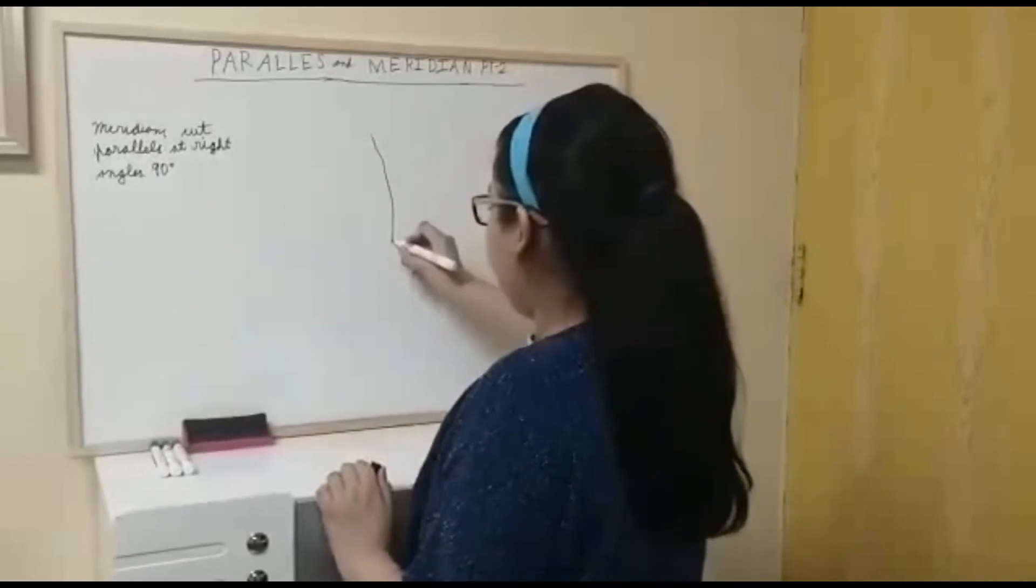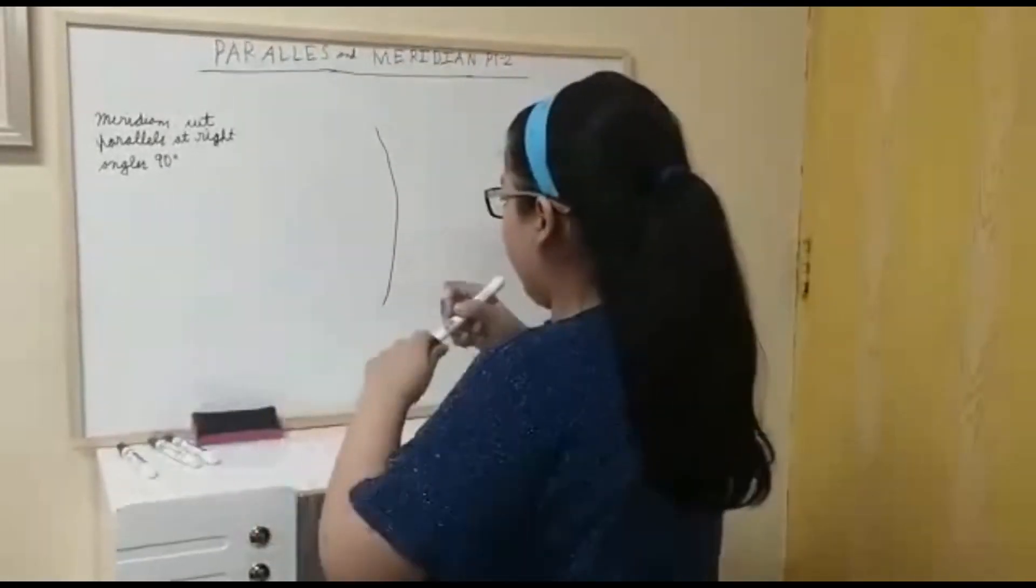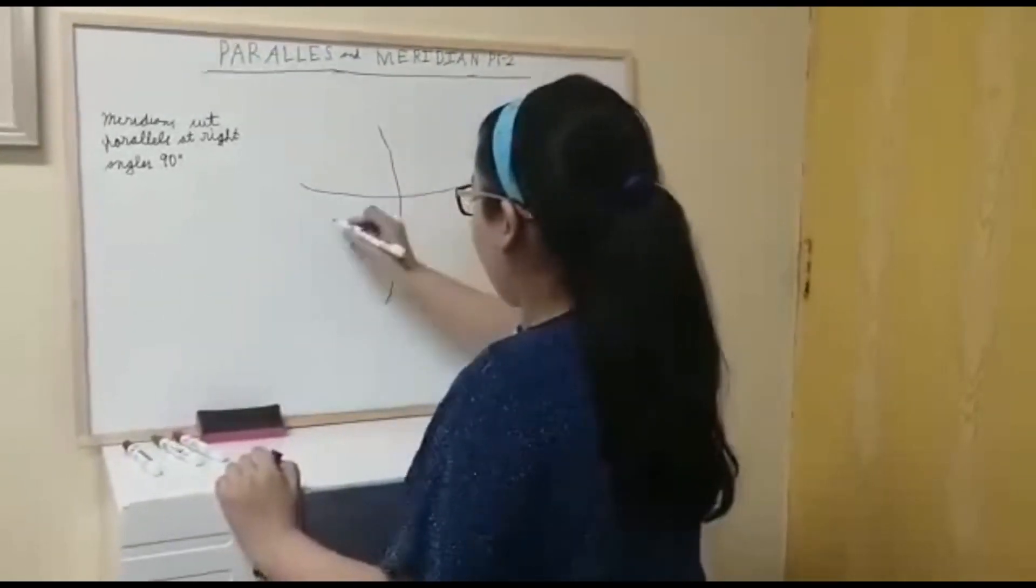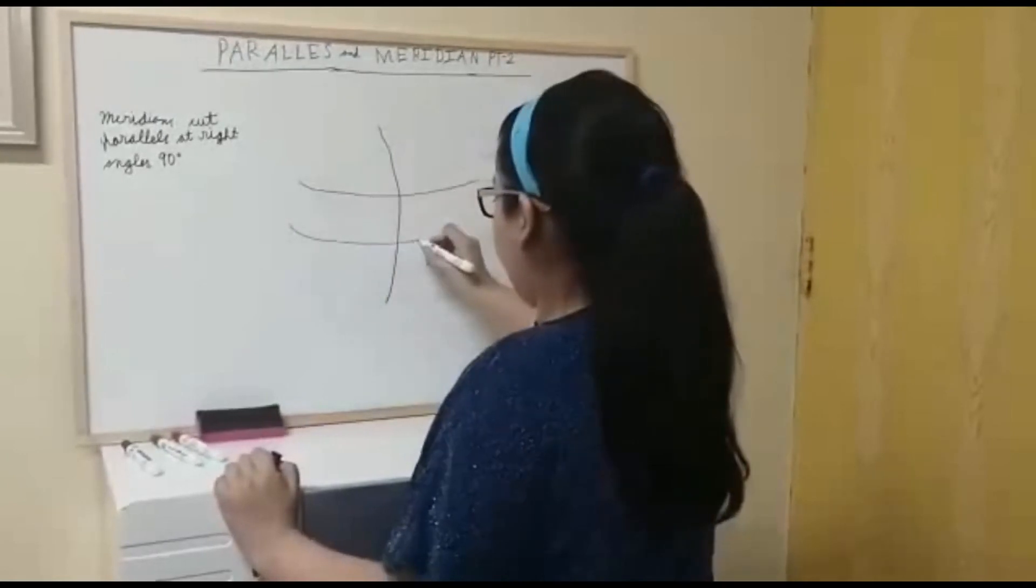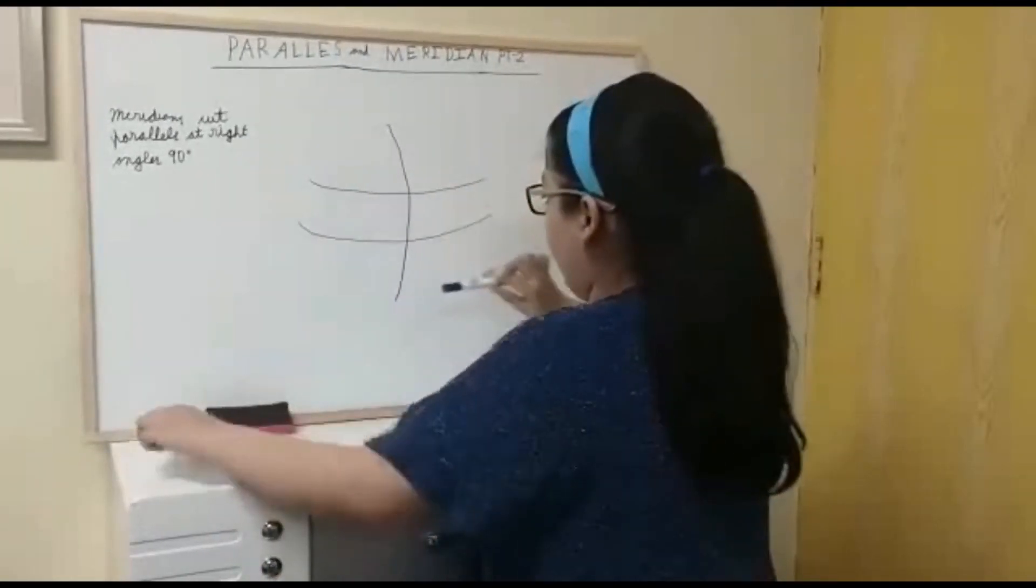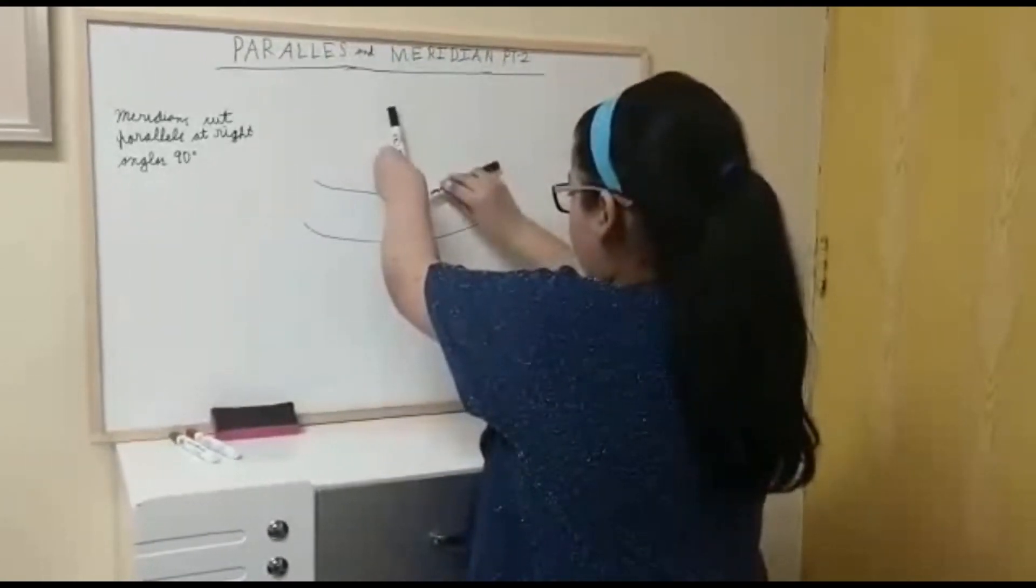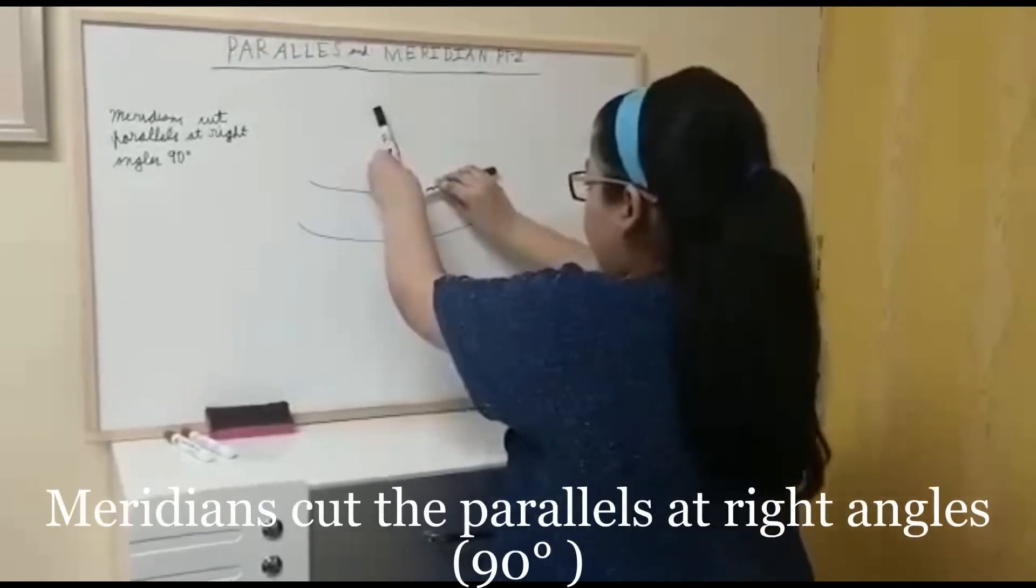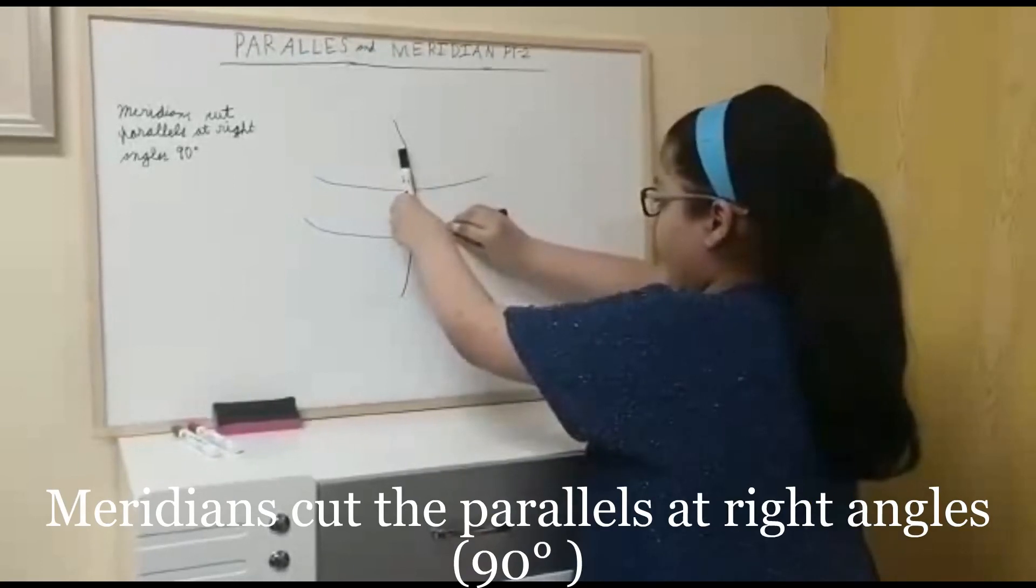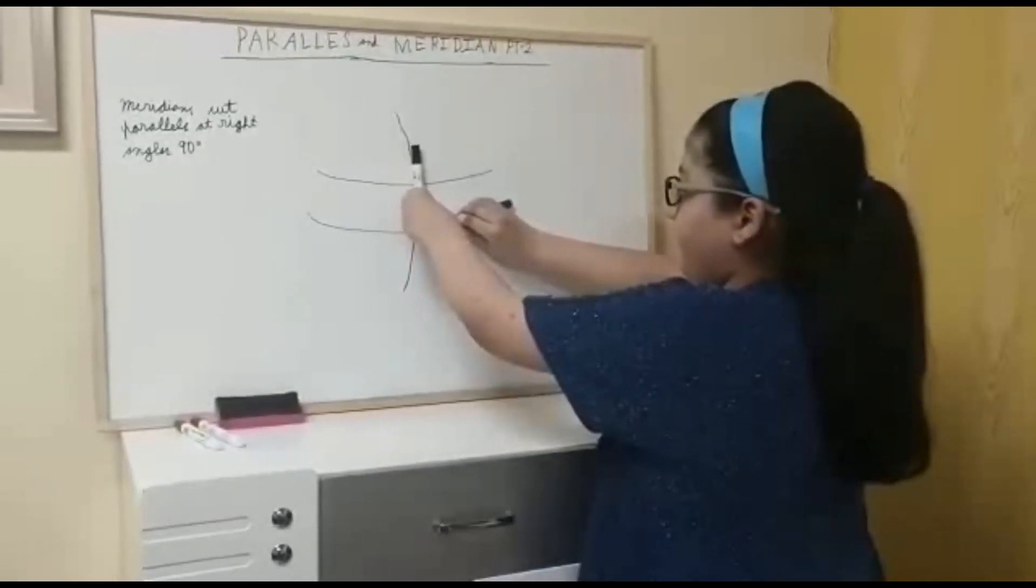So this is your Meridian. Now we are going to make parallels. I am going to make two. So these are your parallels and this is your Meridian. Now when you measure it like this, this is 90 degrees. And then when you measure here it is 90 degrees as well. Good.